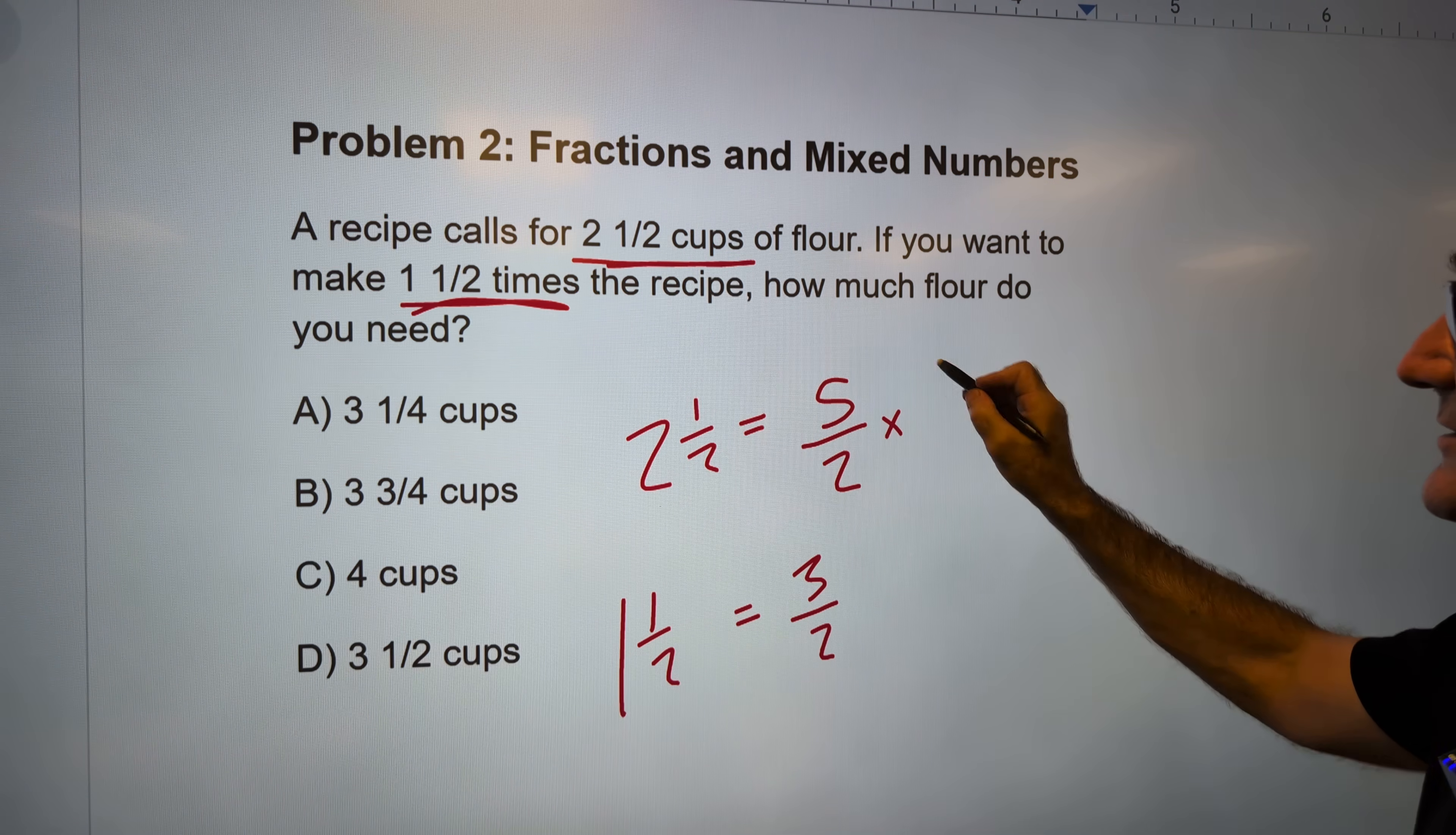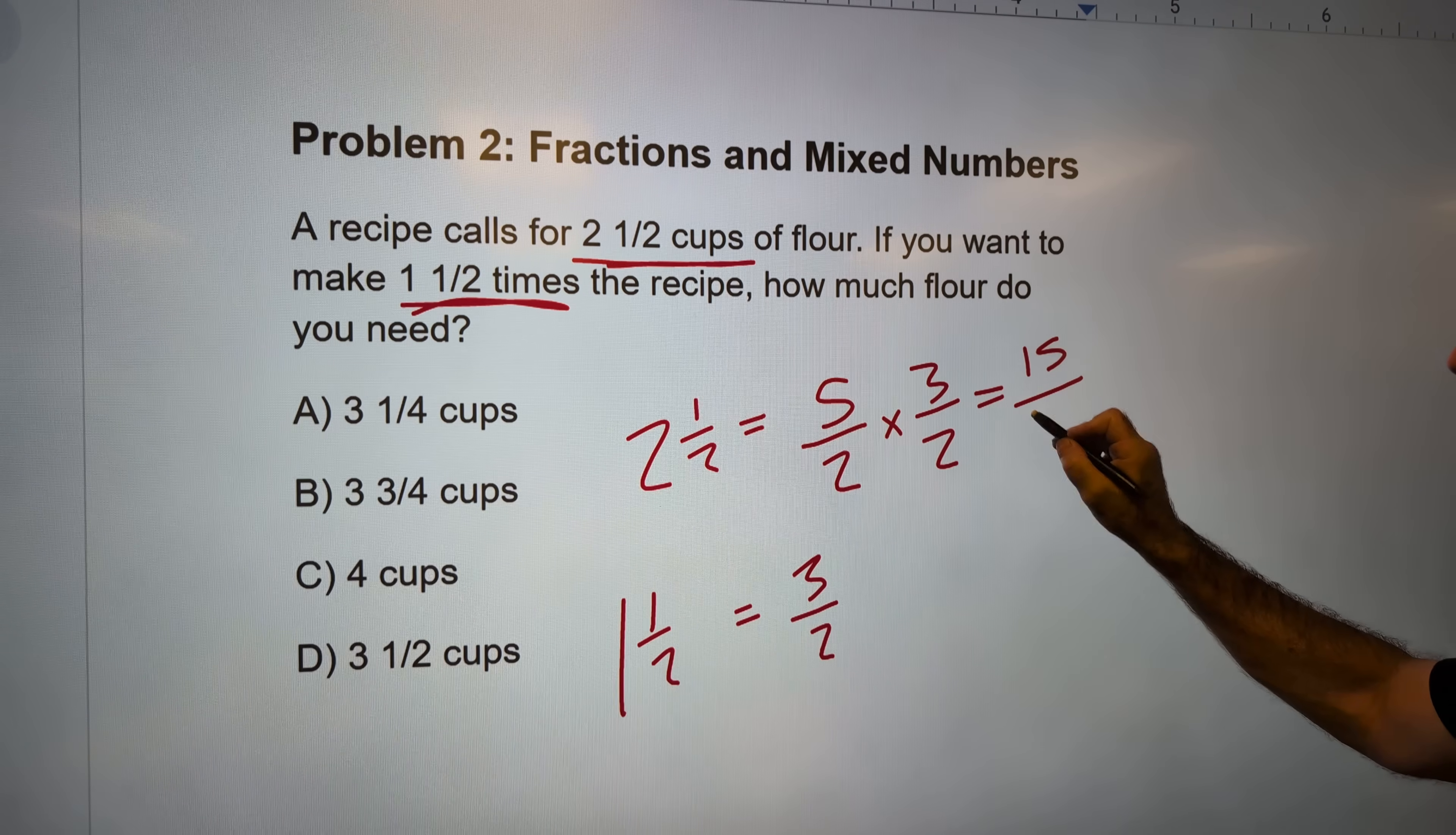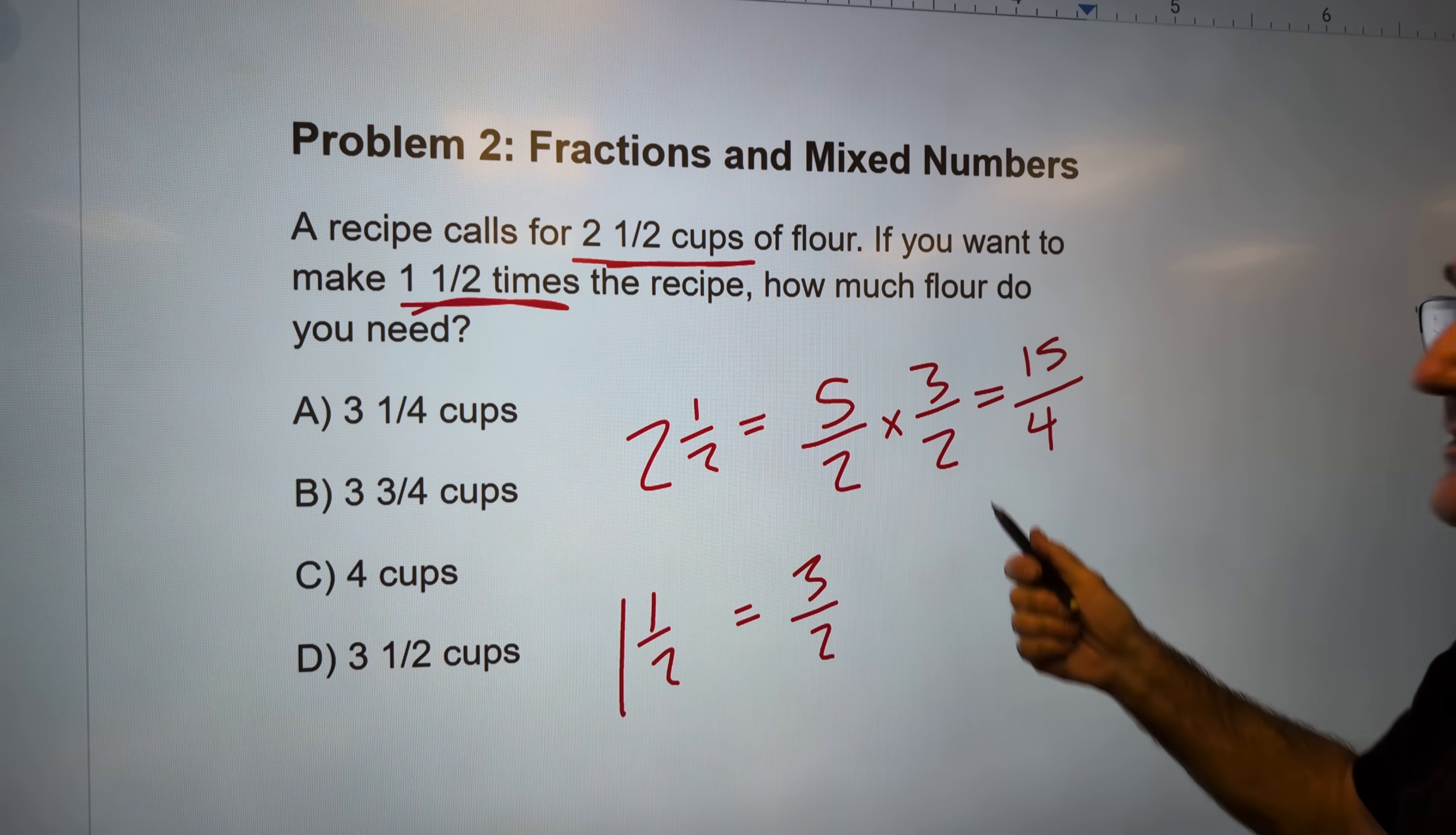5/2 times 3/2. I am multiplying fractions. So I multiply straight across the top to get 15. Straight across the bottom to get 4. There's my answer. I see if it's up there. It is not. These are all mixed numbers. So I have to convert this into a mixed number.